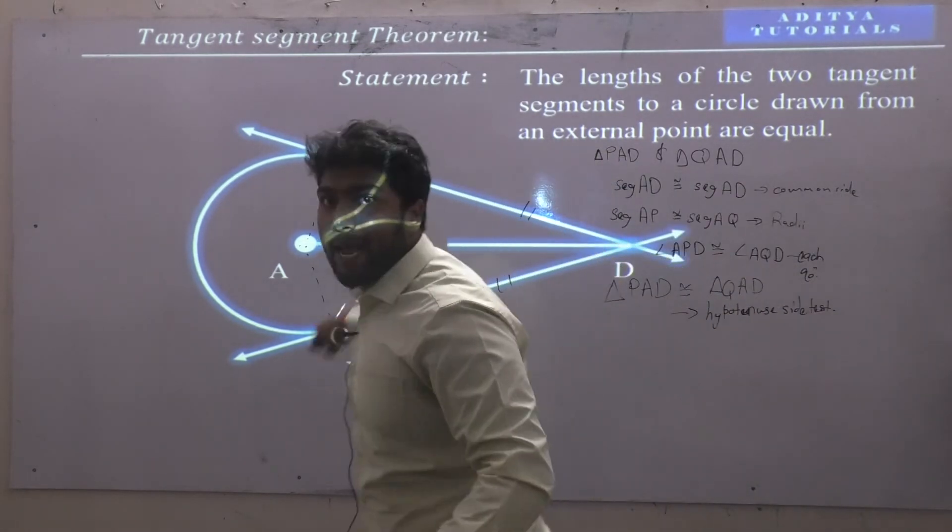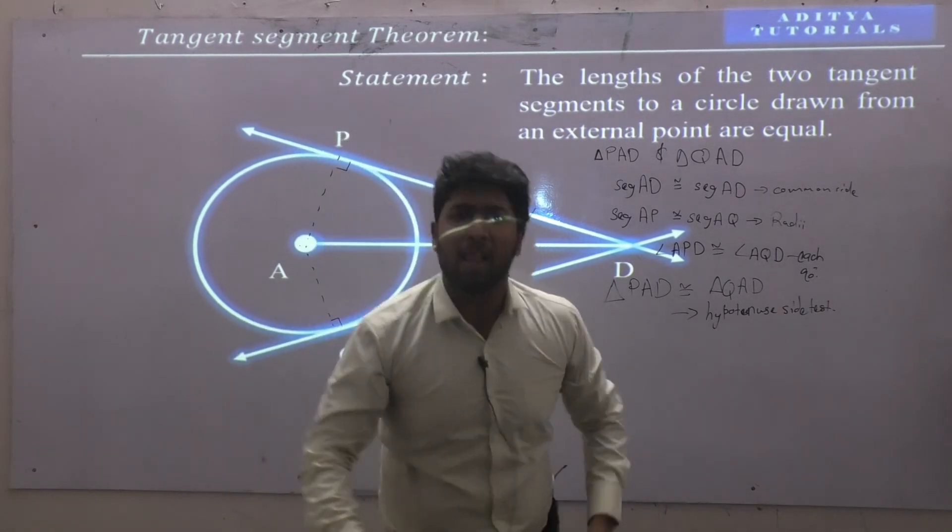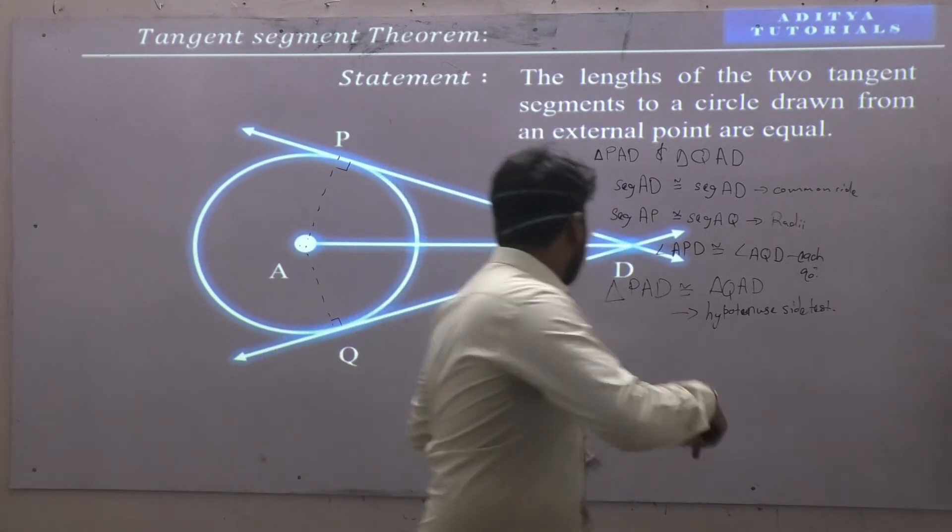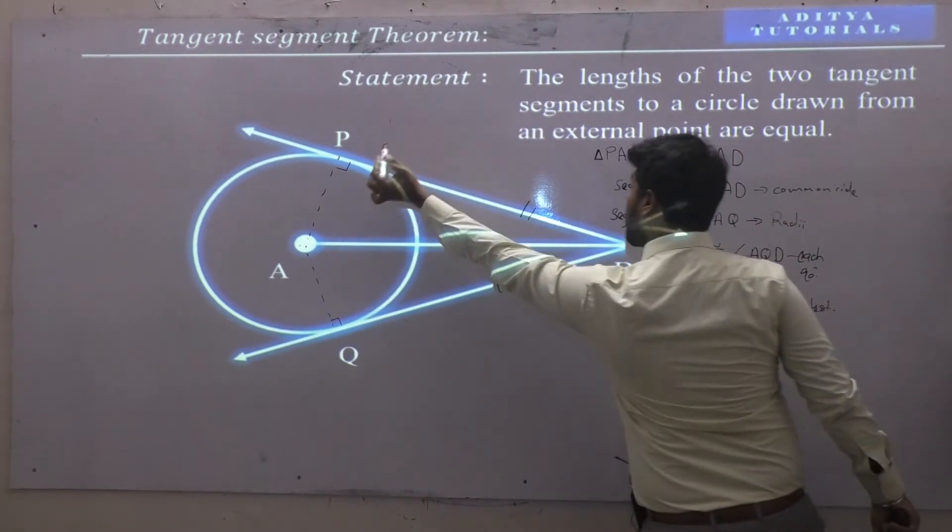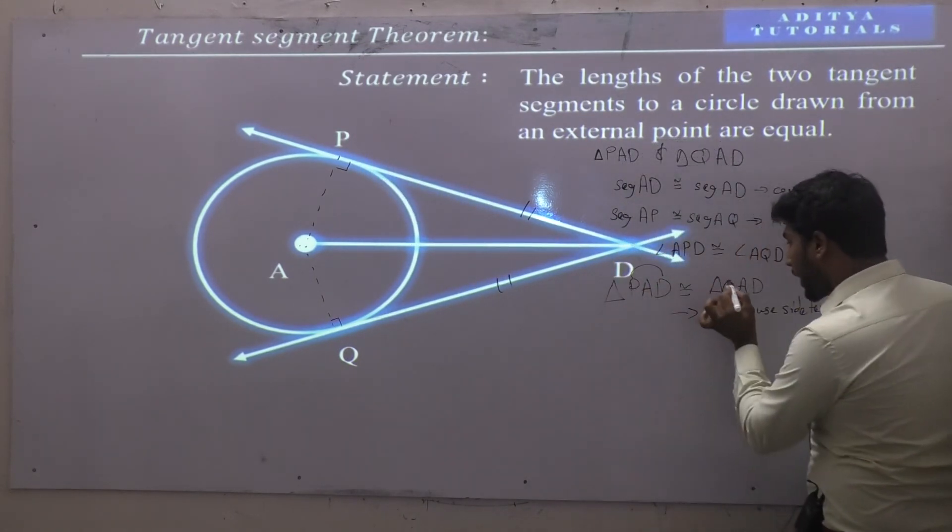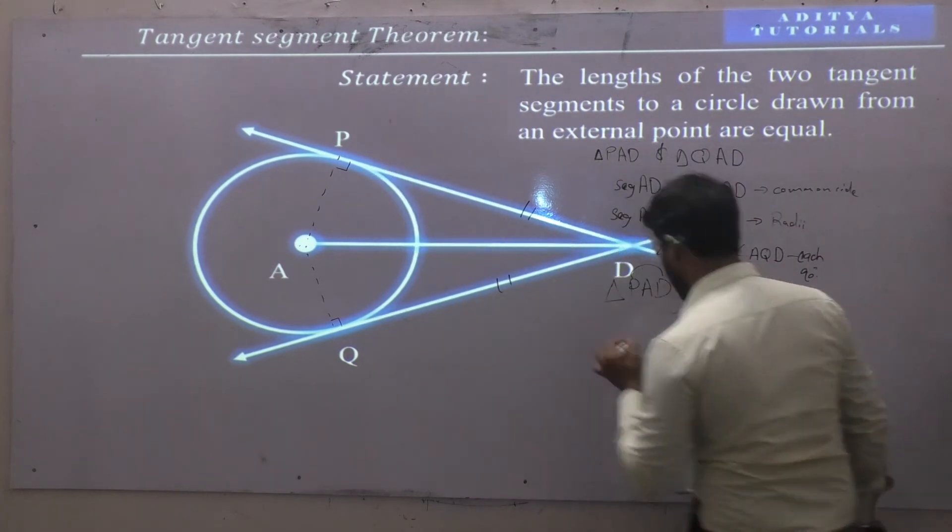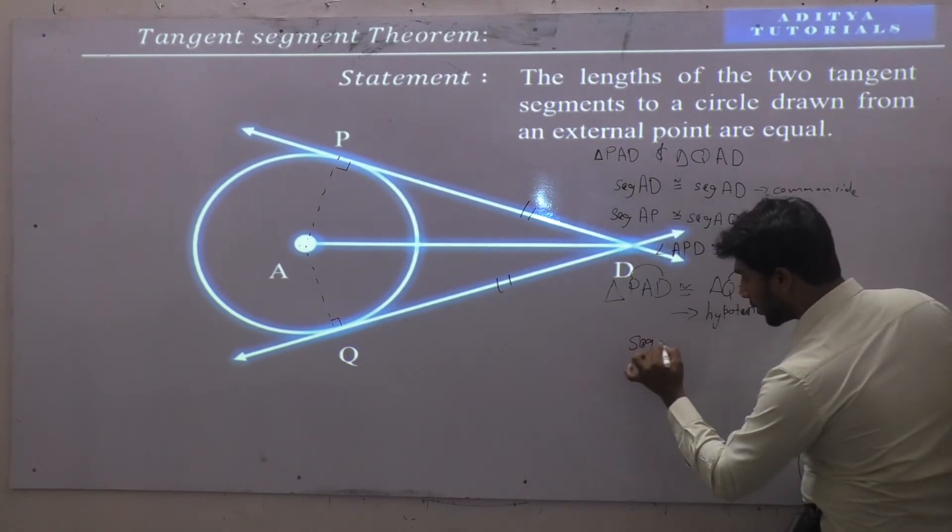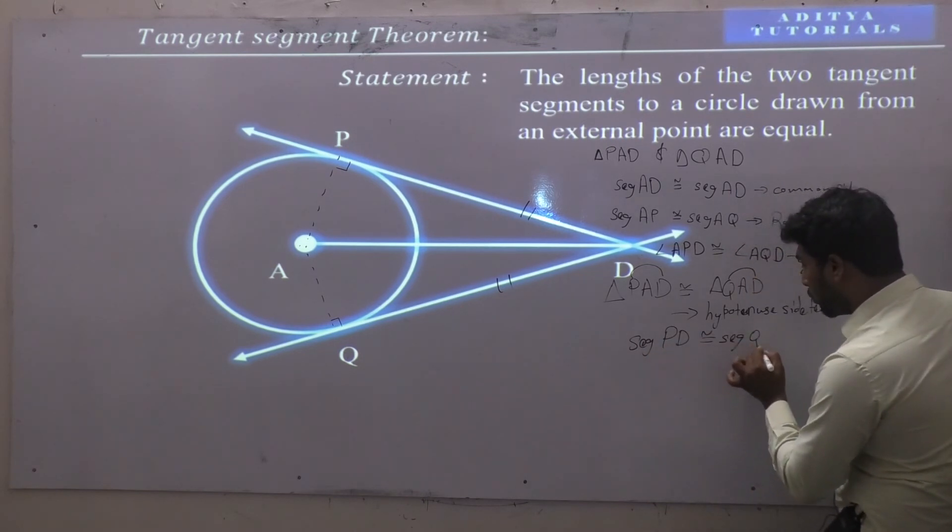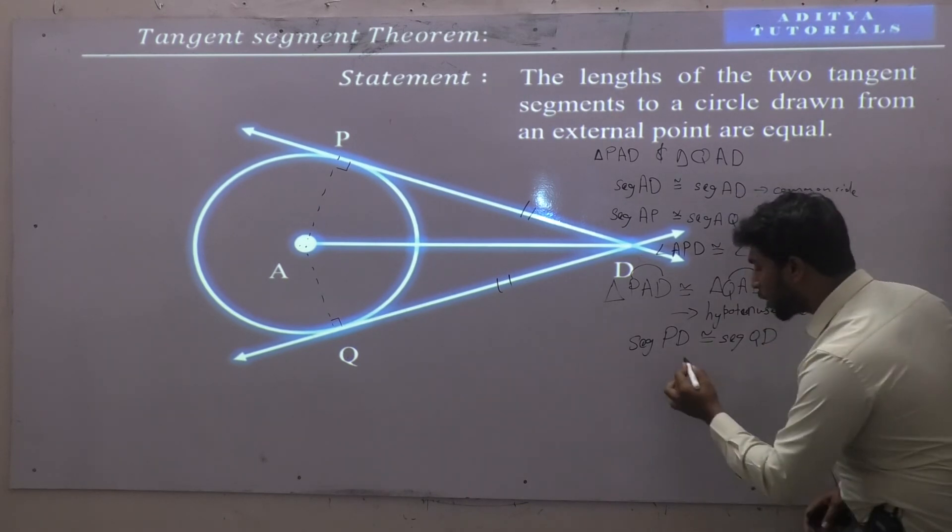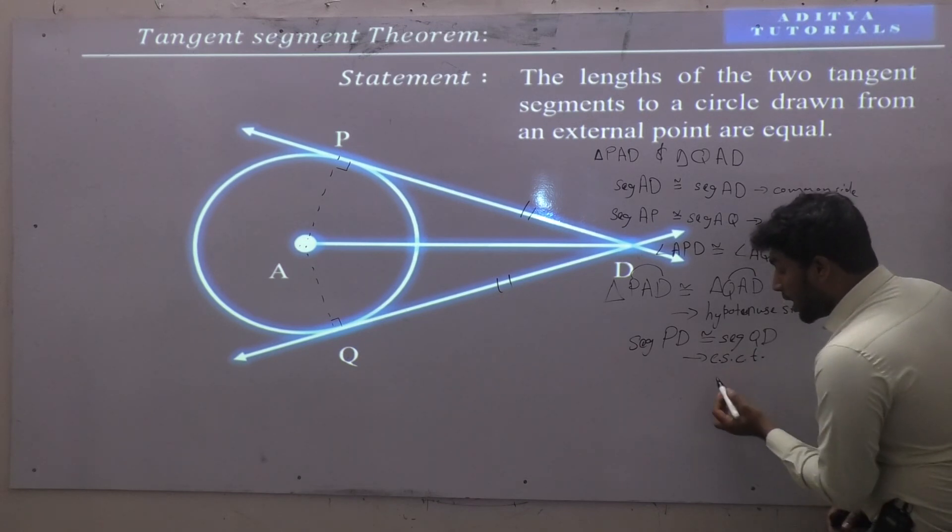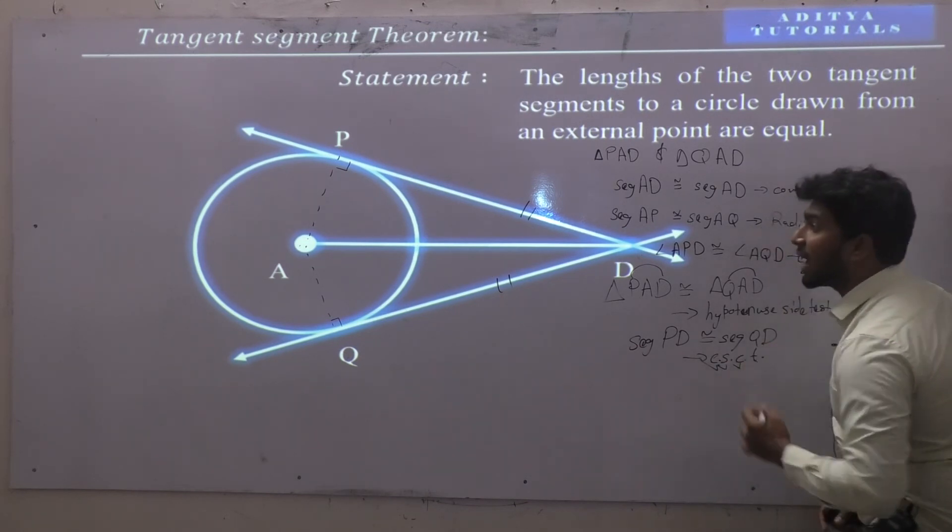When these two triangles, then I can say corresponding angle, corresponding sides. Okay, I can say segment PD, segment QD is congruent to segment QD. Reason, reason, reason, how does it come?